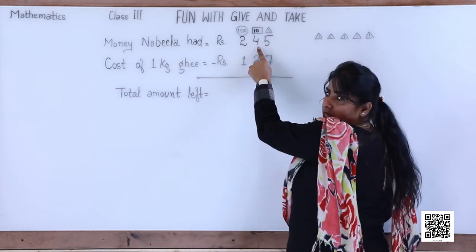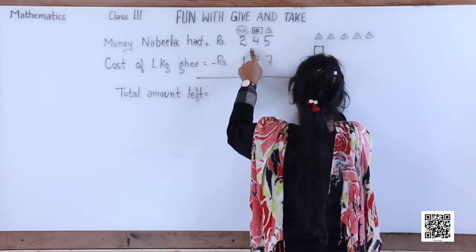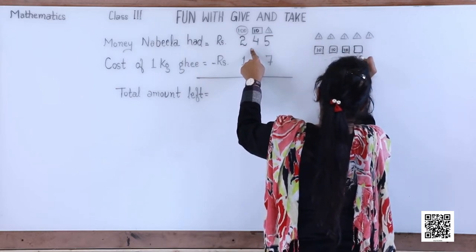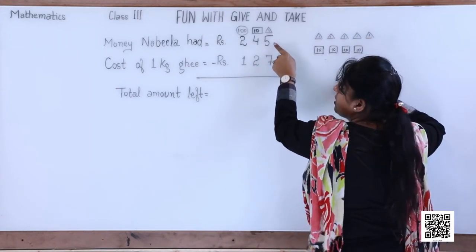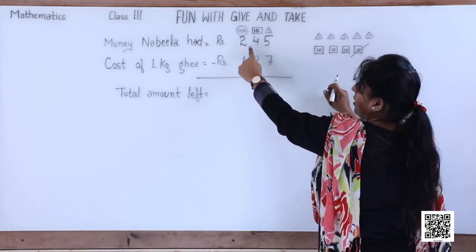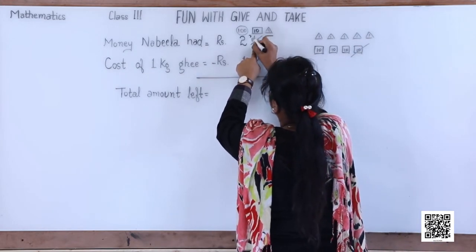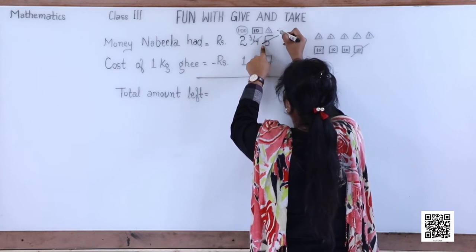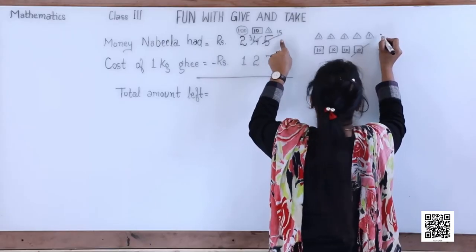There were four tens. The ones place borrows one ten from the four tens, so the tens become three, and the ones place goes from five to fifteen — five already there, plus ten borrowed. So now we have fifteen ones triangles. Out of fifteen we can subtract seven. We are going to cancel seven of the triangles.